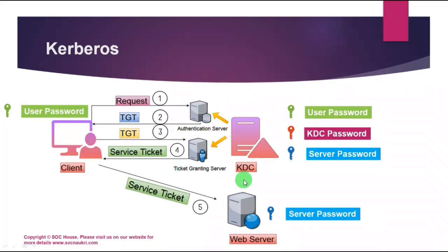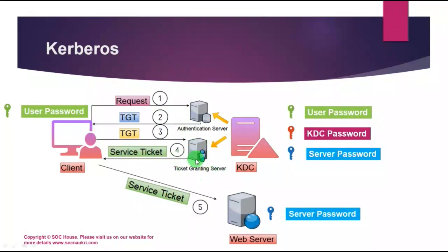The Ticket Granting Server provides the service ticket to the user for accessing requested services. First, the client sends a request to the Authentication Server and receives a TGT in response — this ticket proves the identity of the user. Second, the client sends the TGT to the Ticket Granting Server to request access to server services. The TGS verifies the TGT, approves the request, and provides a service ticket. Finally, the client uses the service ticket to access the server where the requested resources exist.